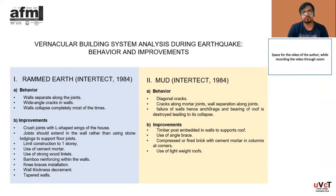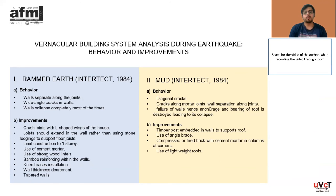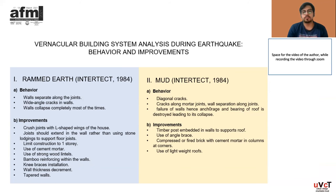Let's talk about mud behavior during an earthquake. Diagonal cracks form on the walls, cracks appear along mortar joints or separation along joints, failure of walls leads to destruction of roof anchorage and bearing, ultimately leading to collapse. Improvements include: timber posts embedded in walls to support the roof; use of angle braces; compressed or fired brick with cement mortar at columns; and use of lightweight roofs.